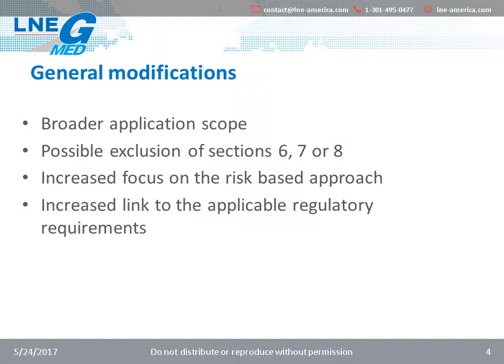With the same goal in mind, the standard now allows an organization to exclude sections 6, 7, or 8, where it was only section 7.3 before. This also means that if an organization relies on ISO 13485 certification within its supplier control process, they will have to look closer at the certification scope. Last but not least, there is an increased focus on risk management and the applicable regulatory requirements, both of which are found in sections related to supplier control.